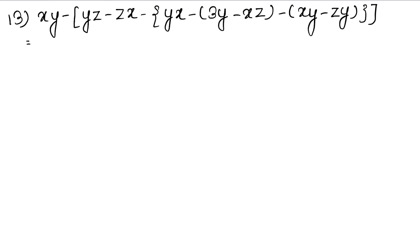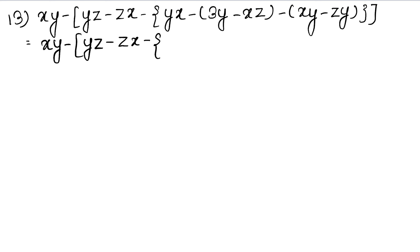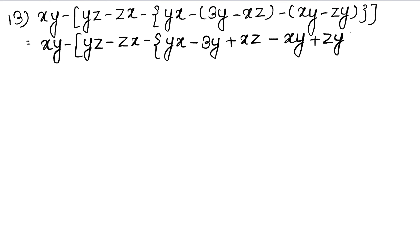First of all, we open the small brackets. There is a minus sign outside, so the signs inside change and the rest of the things remain as they are. So we get: minus YZ minus ZX minus curly bracket YX minus 3Y, and then YZ plus XZ. Then minus sign applies, giving minus Y and ZY plus, curly bracket, and then bigger bracket.